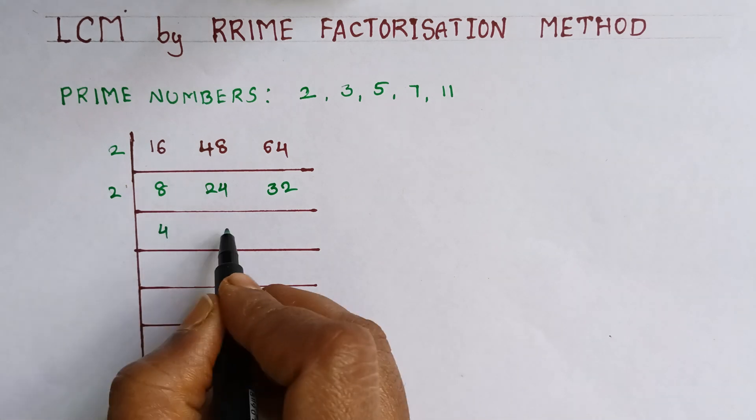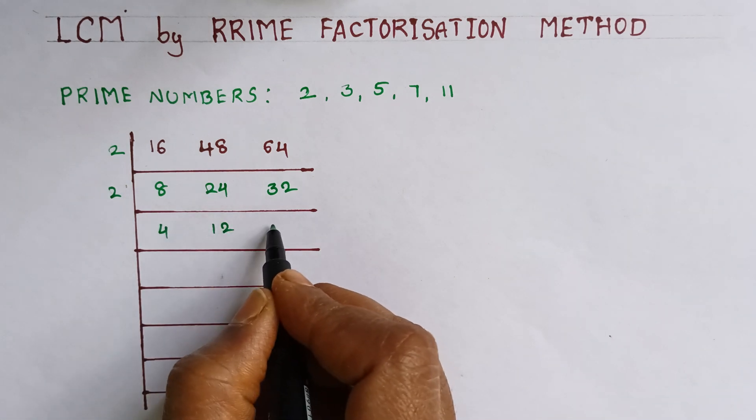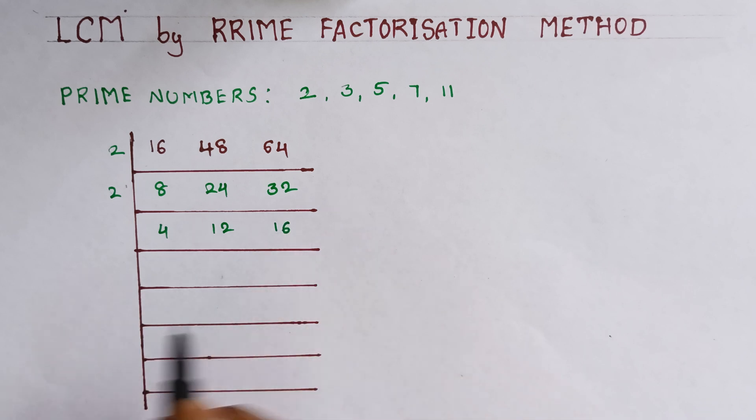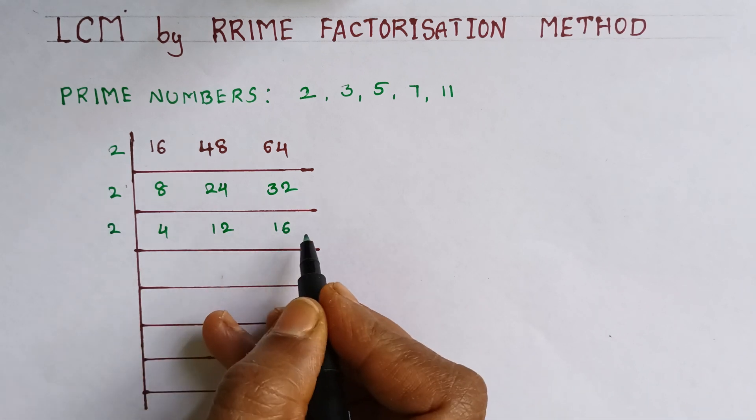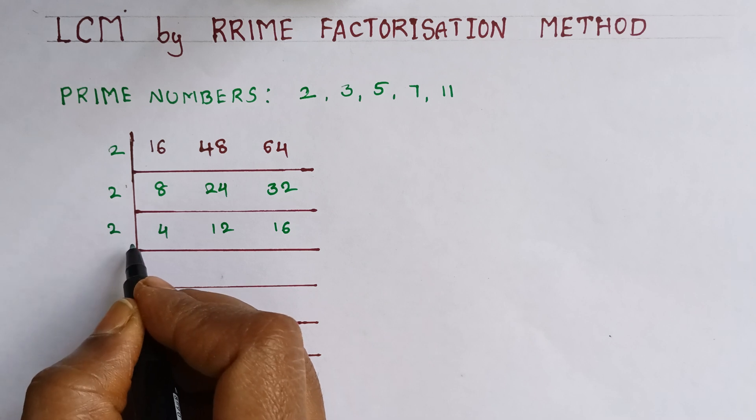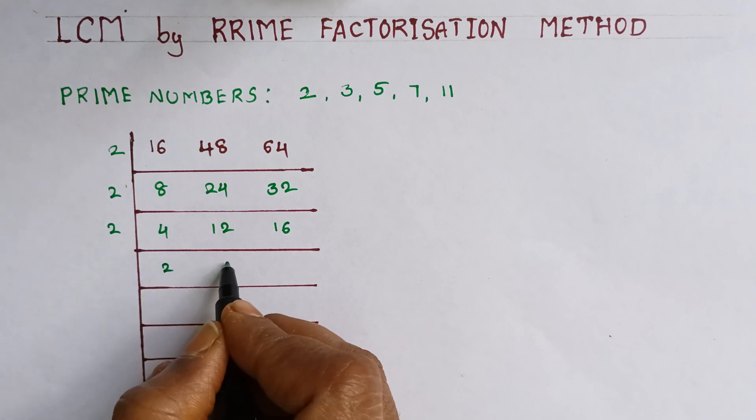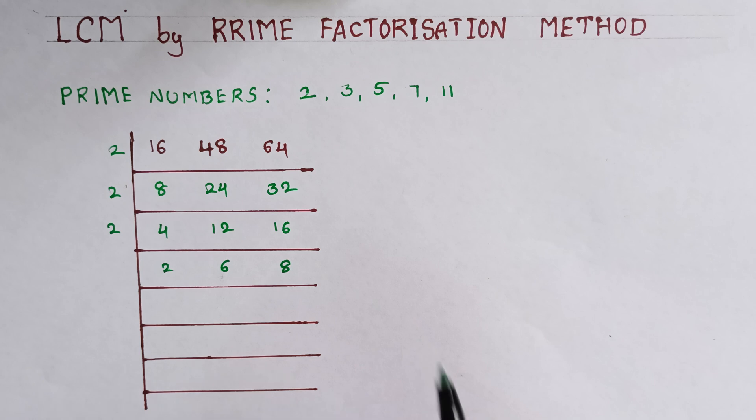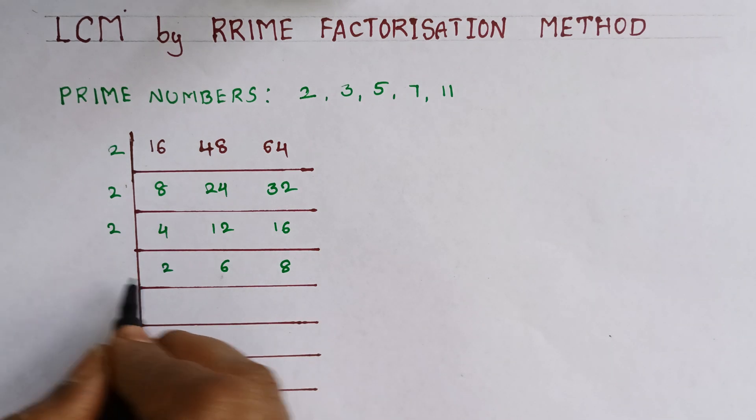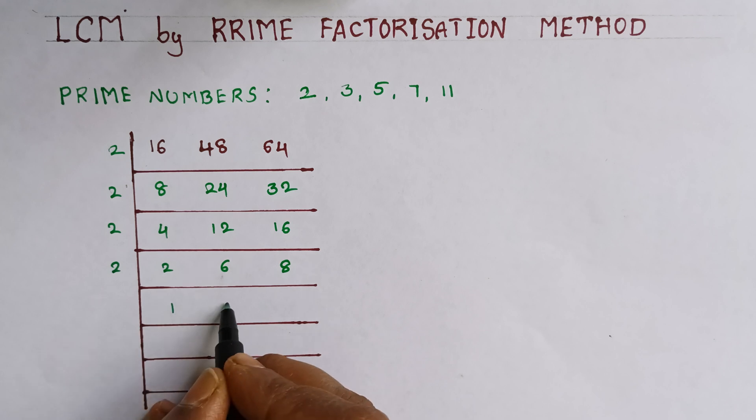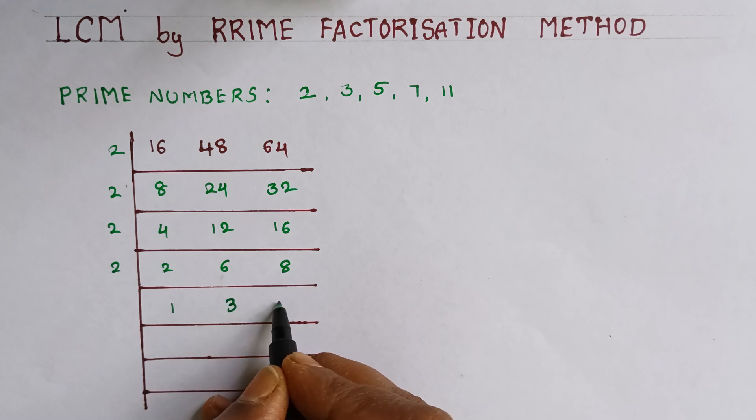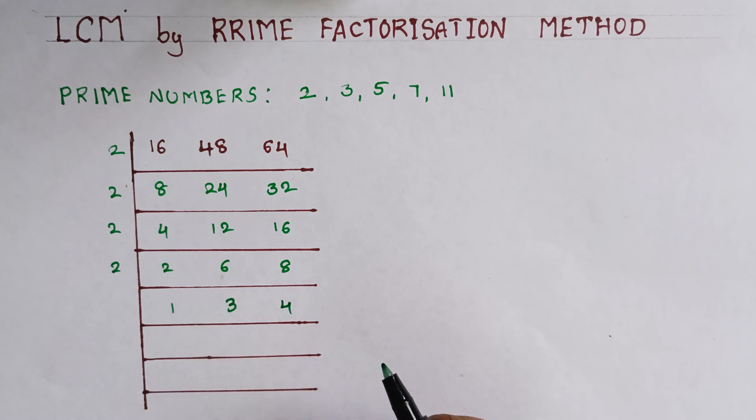This is thirty-two. Again we can take the same two: two fours and two ones are, two twos are, two ones are, and two sixes are. Again we can take the two. All even numbers we can take it two: two twos are four, two sixes, two eights are sixteen. Again, all even we can go with two table only: two ones are, two threes are, and two fours are eight.